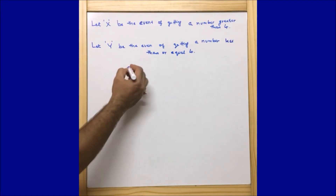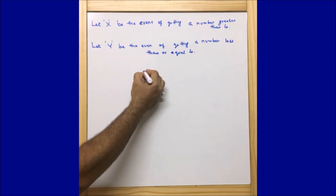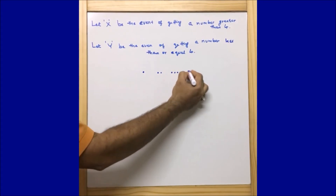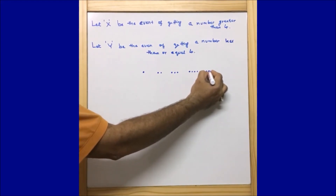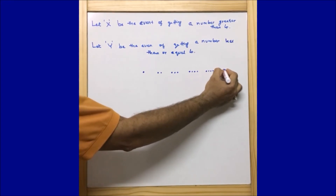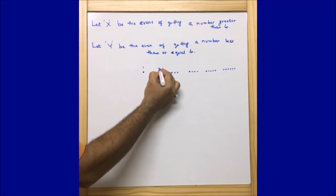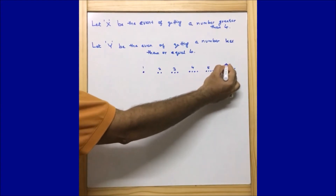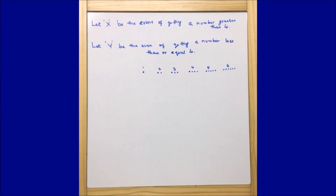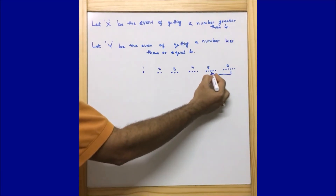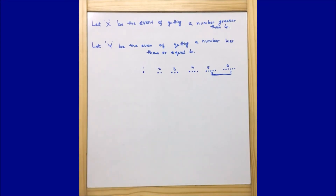Let us first imagine one die. If you look at a die, there are six sides: 1, 2, 3, 4, 5, and 6. The question is asking us what is the probability of getting a number greater than 4. Greater than 4 means there are only two numbers — 5 or 6.